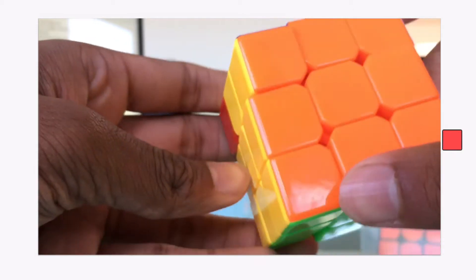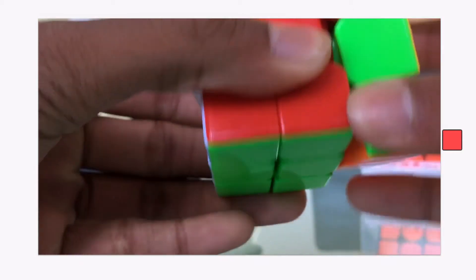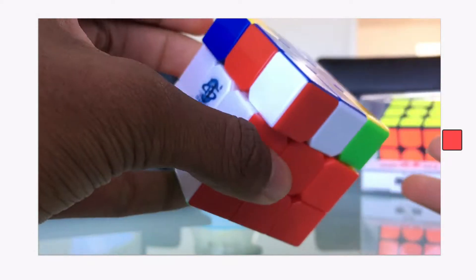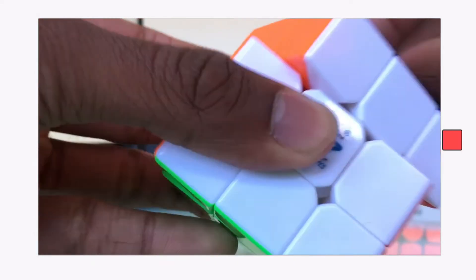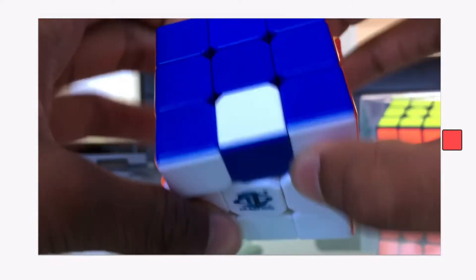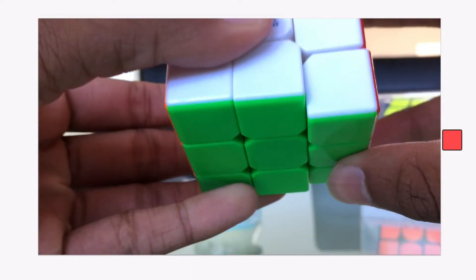First of all, it is impossible to have one and only one corner twisted while everything else is solved. I mean, you just can't solve the cube itself. The same thing applies for the edges. You can't just have one flipped edge. Again, it's not a possible case. There are no algorithms to solve the cube.